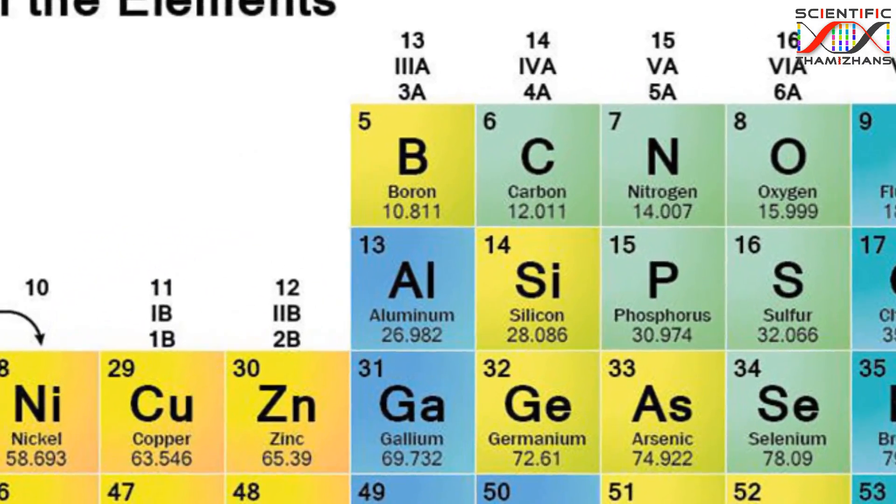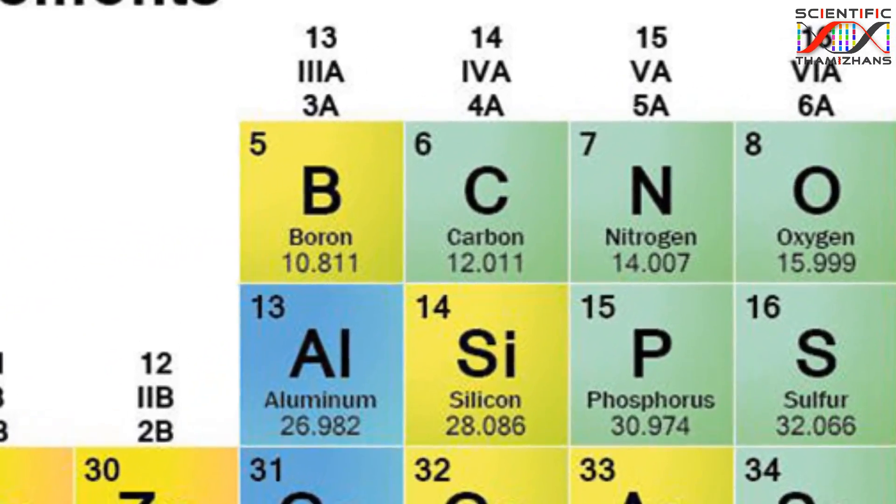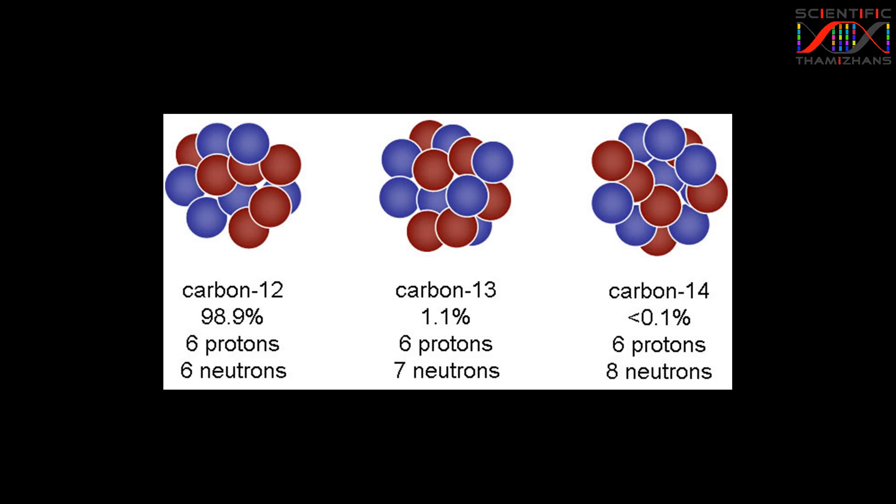Now, if we look at carbon, it comes in types — isotopes. Carbon-12, carbon-13, and carbon-14 are the same element but different types.